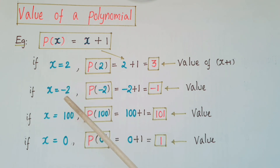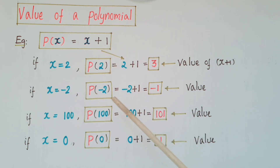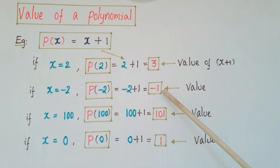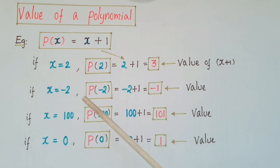So when x is equal to minus 2, then p(-2) = -2 + 1, that is -1. So here -1 is the value of this polynomial when x is equal to -2.